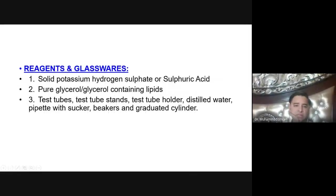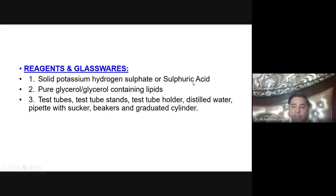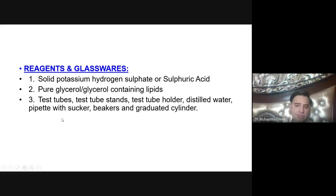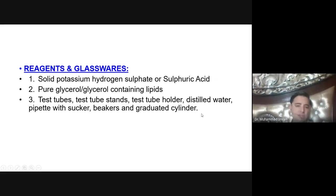What are the requirements of this test? We should have solid potassium hydrogen sulfate or sulfuric acid — both are dehydrating agents. They dehydrate the glycerol and produce acrolein, which gives a pungent smell. Other requirements include pure glycerol or glycerol-containing lipid, test tubes, test tube stand, test tube holder, distilled water, pipette with sucker, beaker, and graduated cylinder.